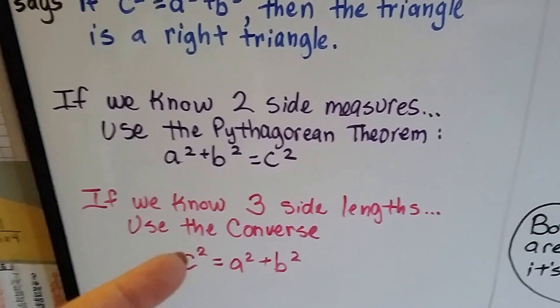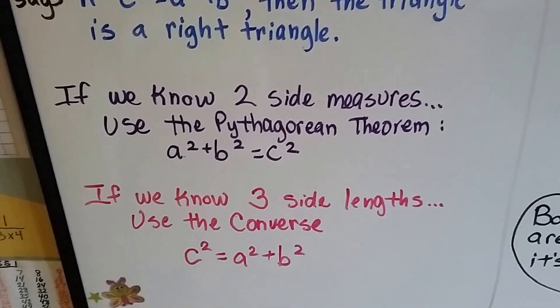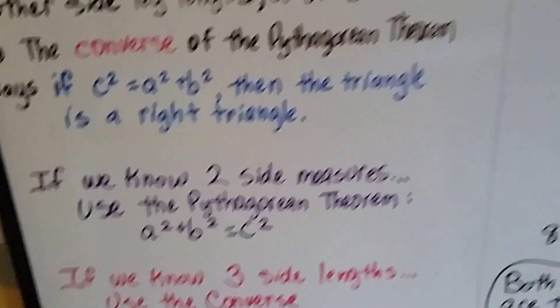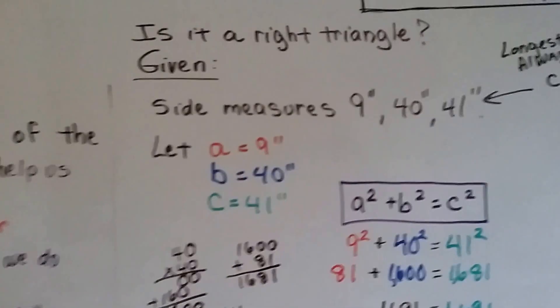And if we know three side lengths, we use the converse, c squared equals a squared plus b squared. Now, let's find out if these are right triangles or not.